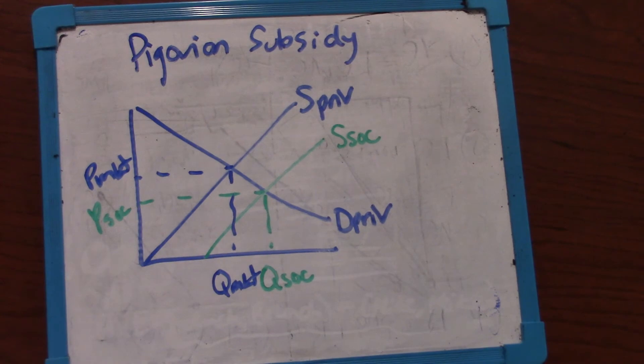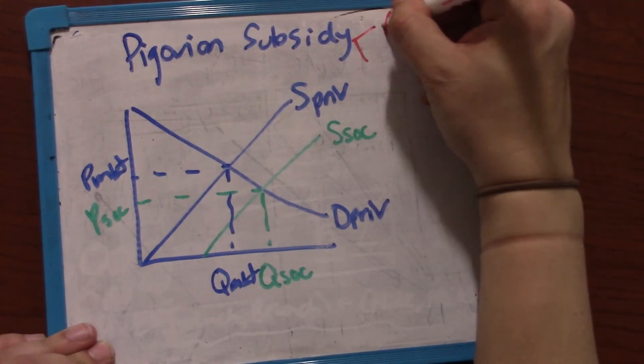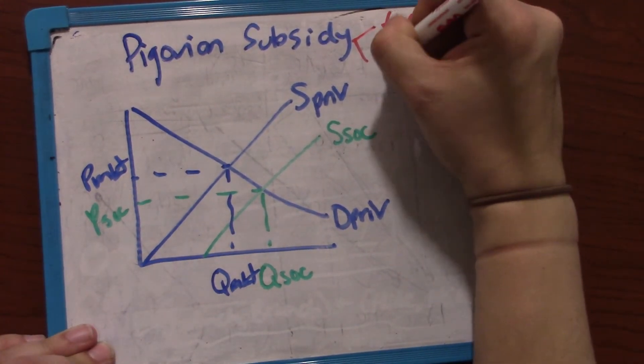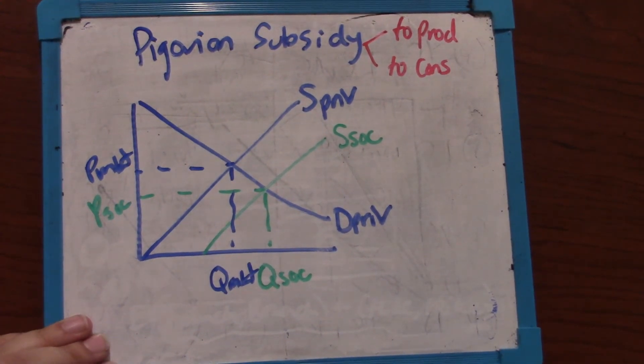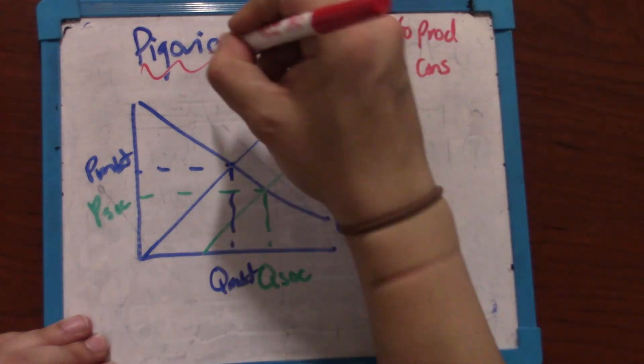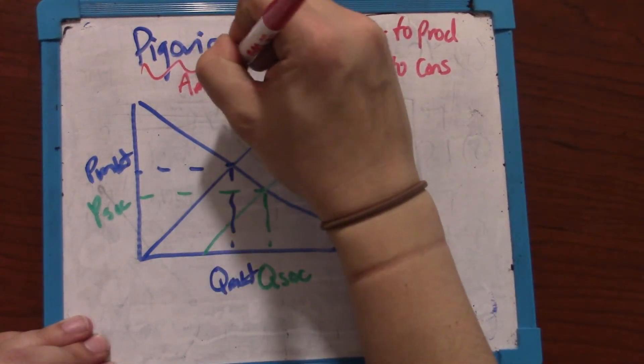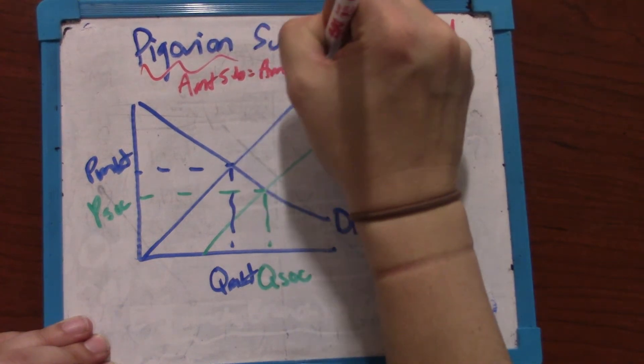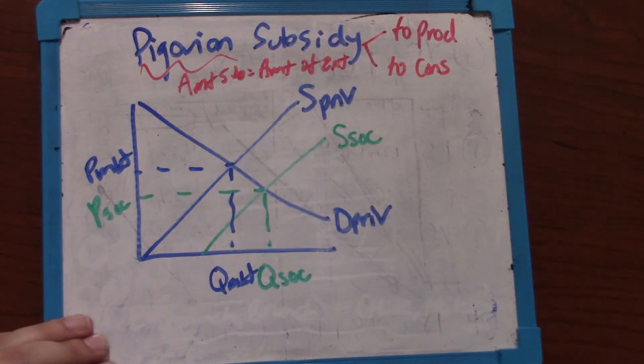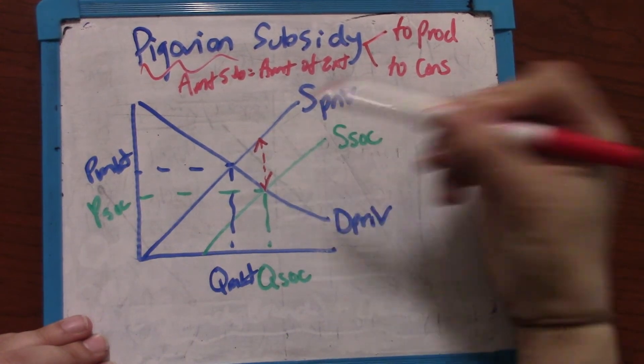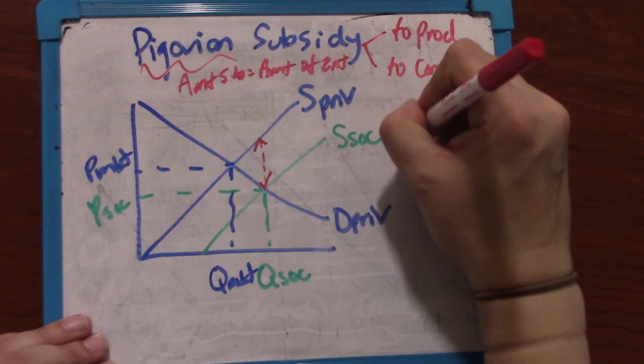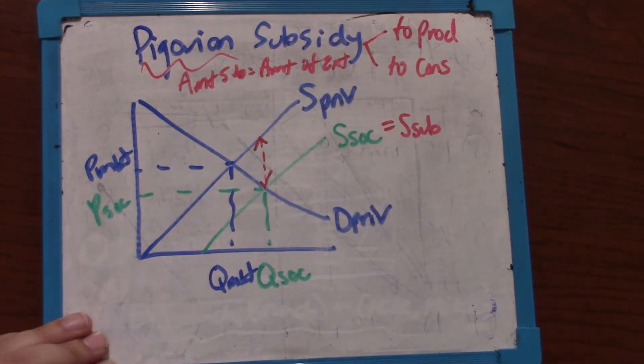So society wants more bees. One way to get there is by paying producers. The subsidy could either be to producers or to the consumers of bees. We're going to show using our graph that it doesn't matter. It's Pigovian always if the amount of the subsidy is equal to the amount of the externality in per unit terms. So we want a subsidy that's exactly equal to that vertical distance. This is going to be our subsidy supply.